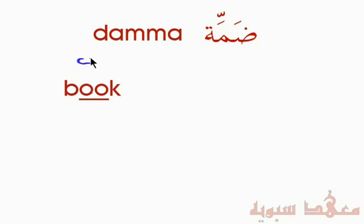We've reached the Dhamma now — it's a small letter vowel. The sound it makes is like the word 'Book.' Although there are two O's written, it's pronounced like a Dhamma. Unlike the word 'Choose,' where there's an elongation — in English, letters can sound differently even when written the same way. In Arabic, we don't have this — the way it's written is the way it's pronounced.